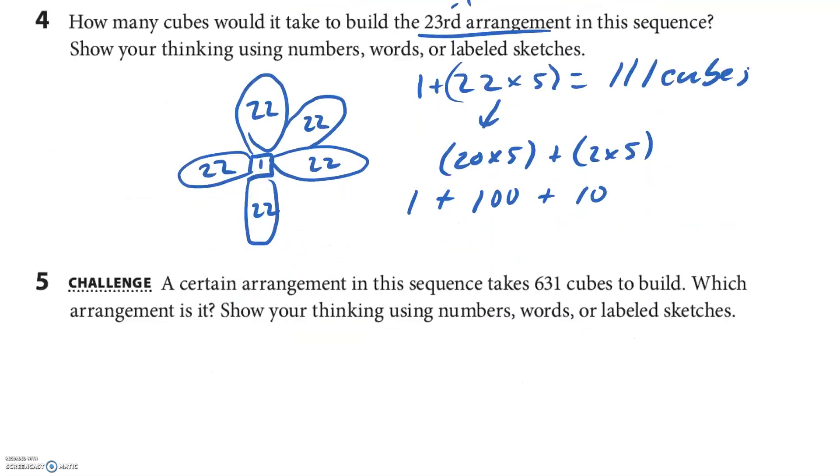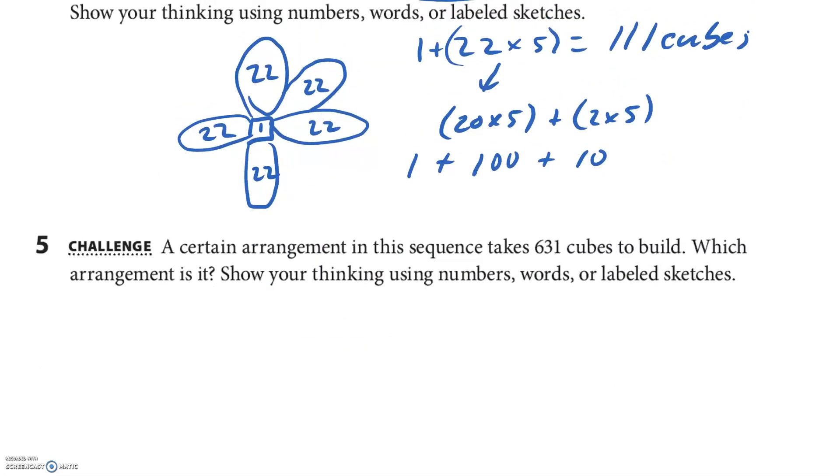All right, we got here and there's lots of time, so I can talk about the challenge for just a minute. Let's see, let's think about this. How much do I want to give you? We'll see. So a certain arrangement in the sequence takes 631 cubes. That's a lot of cubes. Which arrangement is it? So let's draw our picture. And well, I'm trying my little flower picture. The top, the side, the side, the front, and the back. We know there's one there. So that means there's 631 cubes in the whole thing, but there's one right in the middle. So each of these five arms shares the 630 cubes. So let's go 631. Let's take away one for the middle. So that means there's 630 cubes in the arms.